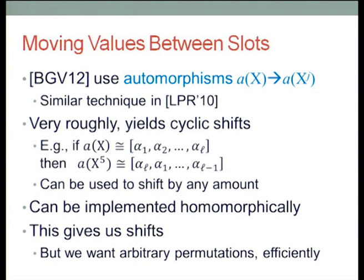For example, if A(X) is a polynomial encoding L elements α_1 through α_L, then A(X^5) — or maybe some other number — encodes the array shifted by 1. This doesn't yet tell you how to do it on ciphertexts, but at least it's an algebraic operation, so you can think it might work nicely with the algebra of the encryption scheme. It turns out it actually does — once you jump through enough hoops, you can implement cyclic shifts of arrays. But cyclic shifts are not what we want; we want generic permutations.